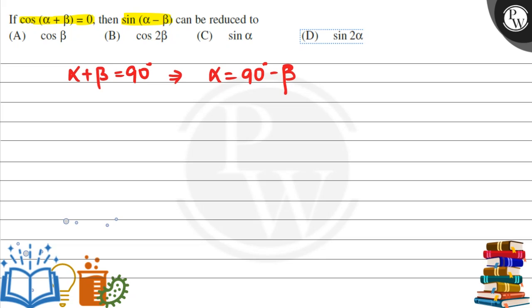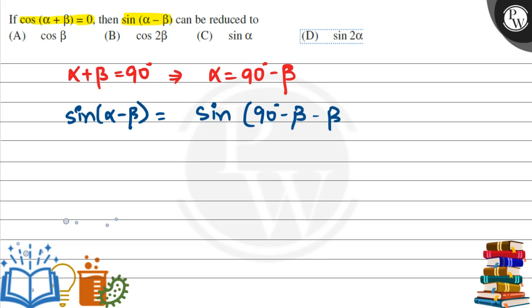So if we talk about sin(α - β), how much is sin(α)? We substitute α = 90° - β, giving us sin(90° - β - β), which is sin(90° - 2β).